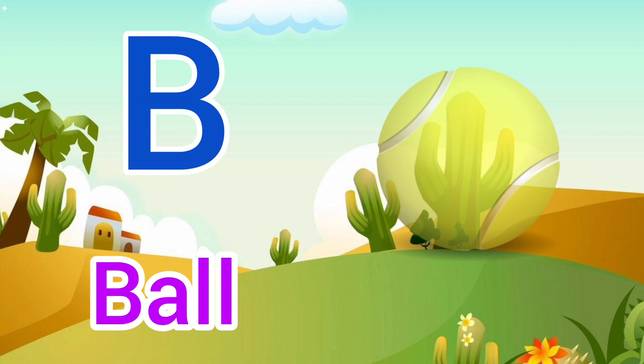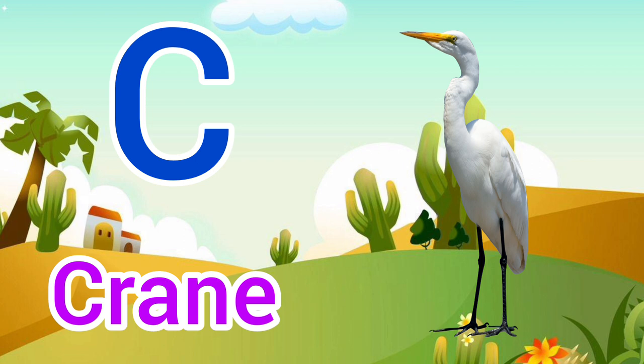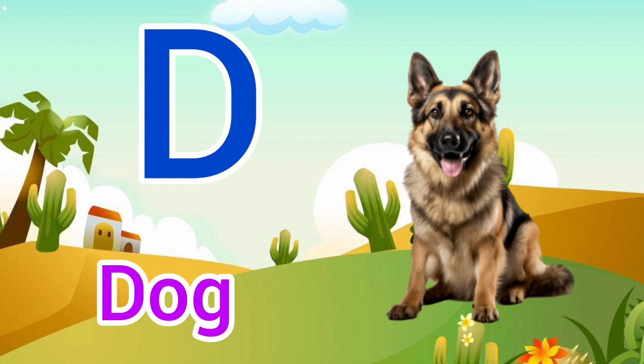C. C for Crane, Crane means Saras. D. D for Dog, Dog means Kutta.